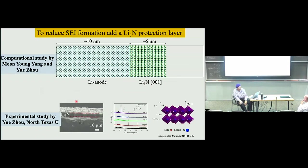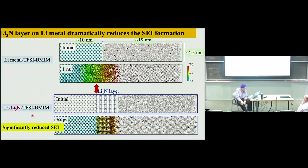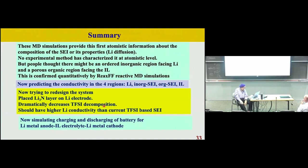The problem is we don't want that SEI, or we want to minimize it. We had the idea that to protect the lithium anode, we could put down something like lithium nitride, which has pretty good conductivity. It turned out Professor Zhao at North Texas University had the idea two years earlier and had already done experiments. But it works — our simulations show that having lithium nitride reduces the reaction by about a factor of five or six. This shows we can do the mechanodynamics with this reactive force field, look at the SEI formation, and use that to understand how to protect the system.